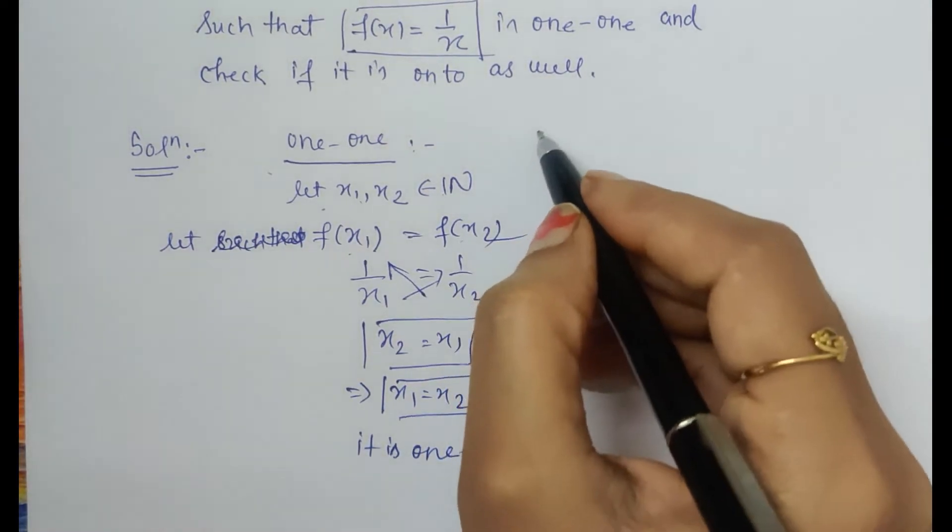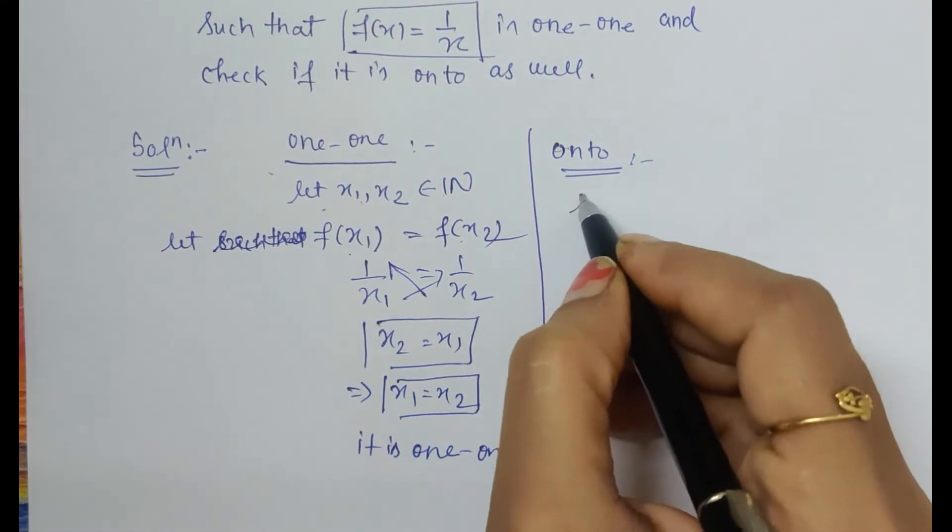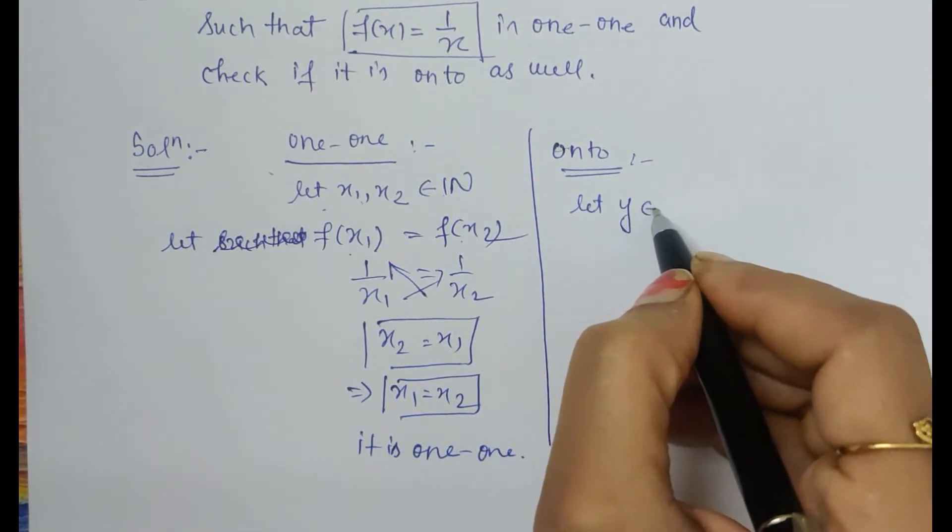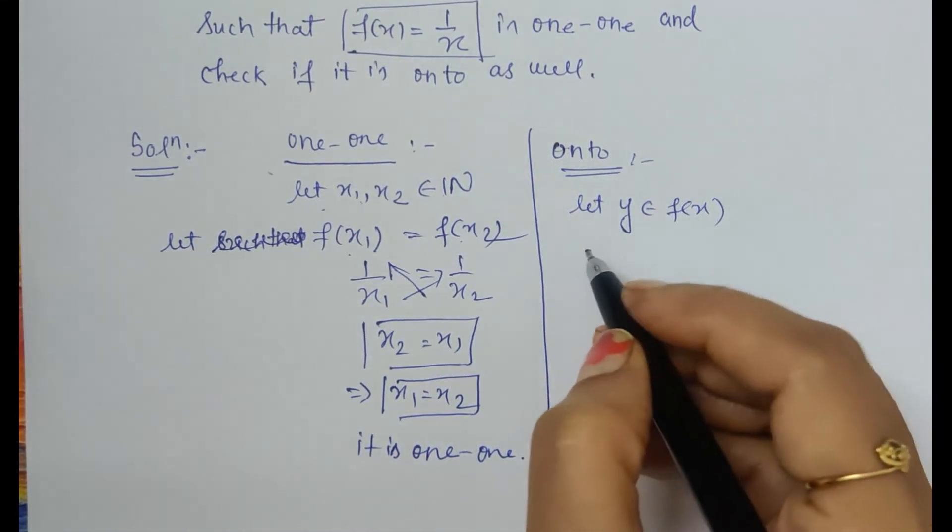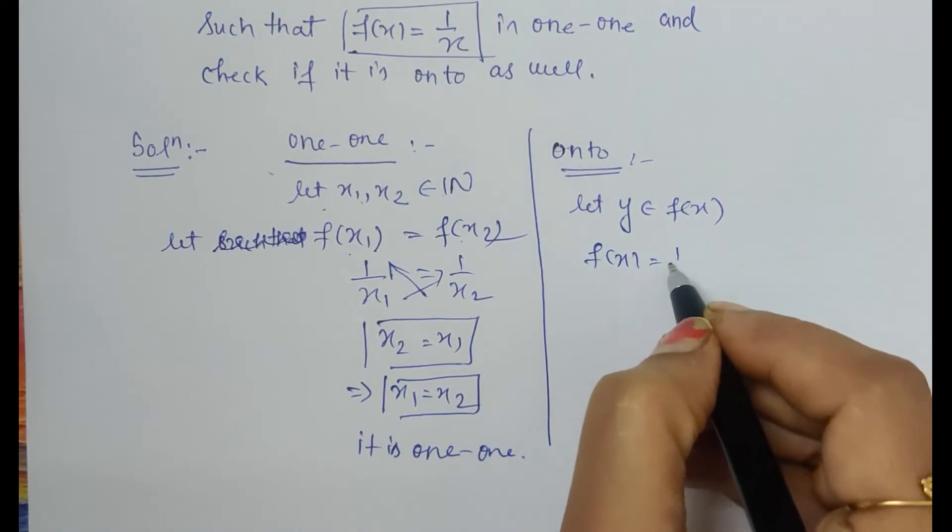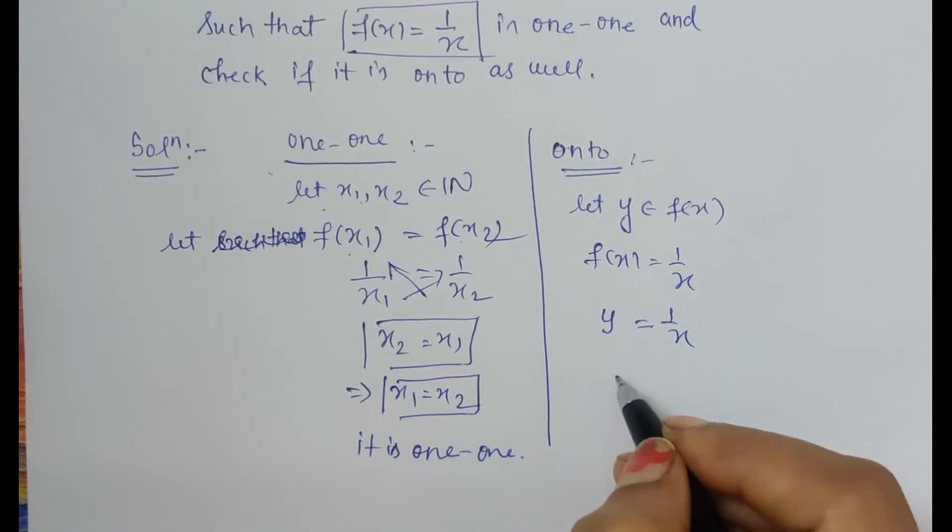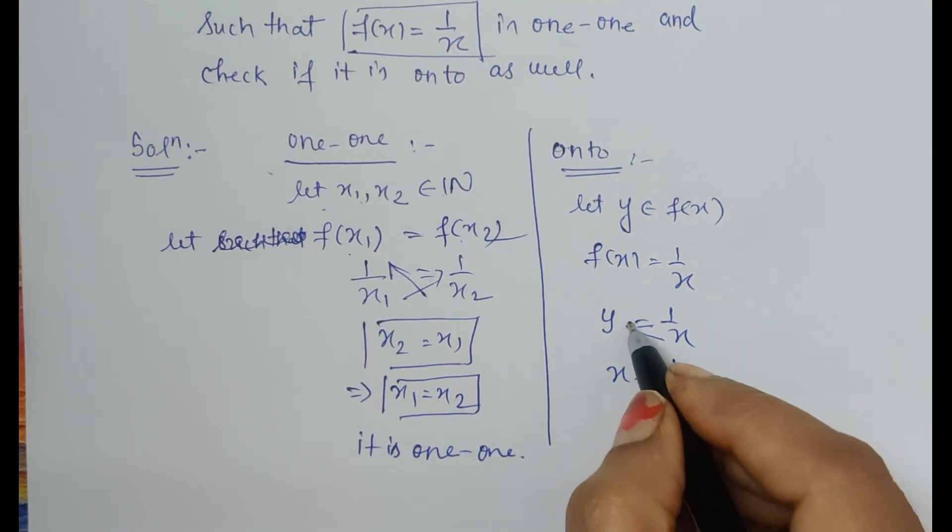Now let's prove for onto. For onto we have to assume an element in the codomain. Let y belong to the codomain. So here we have f(x) equals 1/x, which can be written as y equals 1/x, which can further be written as x equals 1/y.